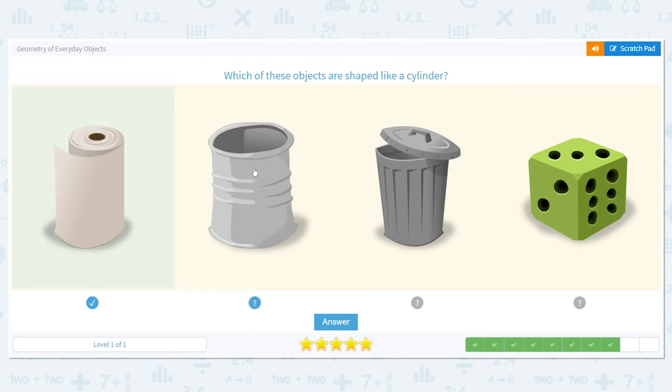How about a can? Yes. And how about a garbage can? Absolutely. Your garbage can might look a little different, but this can, yes, it works. Why doesn't this last picture work? What is this last picture? It's a die. That is a what shape? A cube.